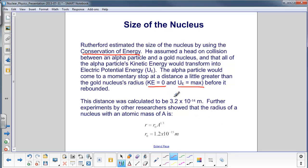Rutherford calculated that the radius of the gold nucleus would be 3.2 times 10 to the minus 14th meters. Further experiments by many other researchers came up with this equation.